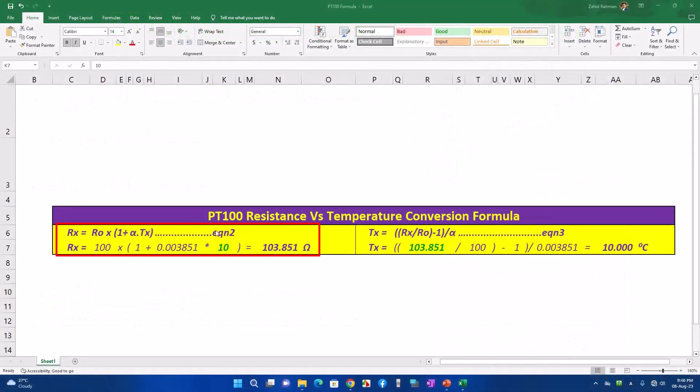So guys, as per discussion, this is our equation 2 where we will calculate the value of resistance at a certain temperature. I have written the equation here. Now we will put the value of Tx. In here, it is set to 10, so the resistance is 103.851 ohms. Here if we write 20, then the value is 107.702 ohms. That is, if the ambient temperature is 20 degrees, then the resistance of the PT100 sensor will be 107.702 ohms. At 0 degree temperature, this value will be 100 ohms. Here if we put 0, we can see the resistance is 100 ohms. That is why it is called PT100.